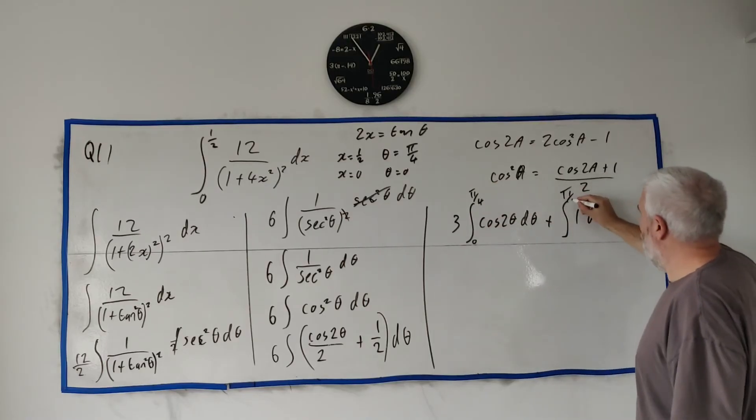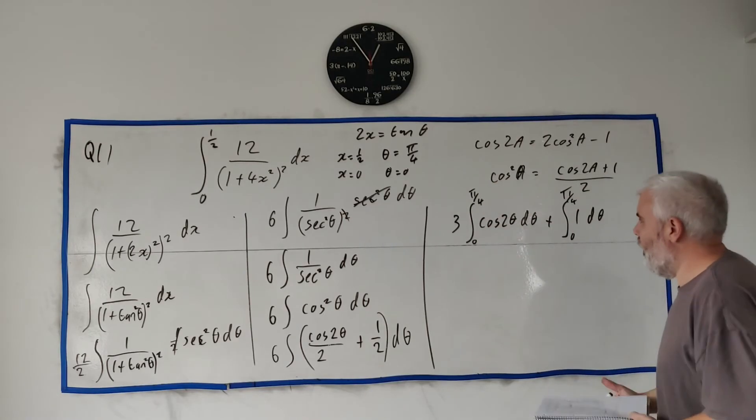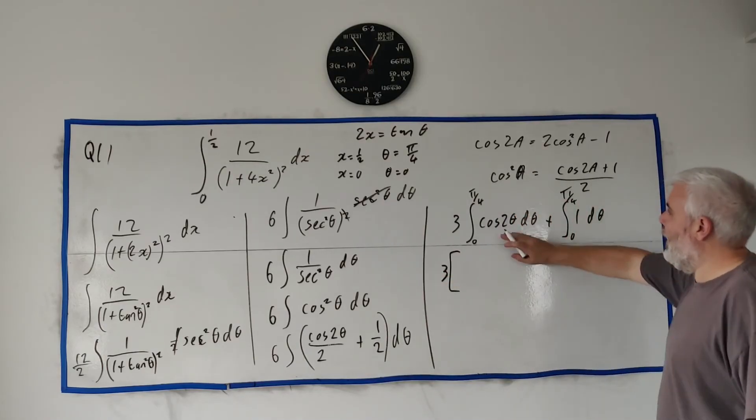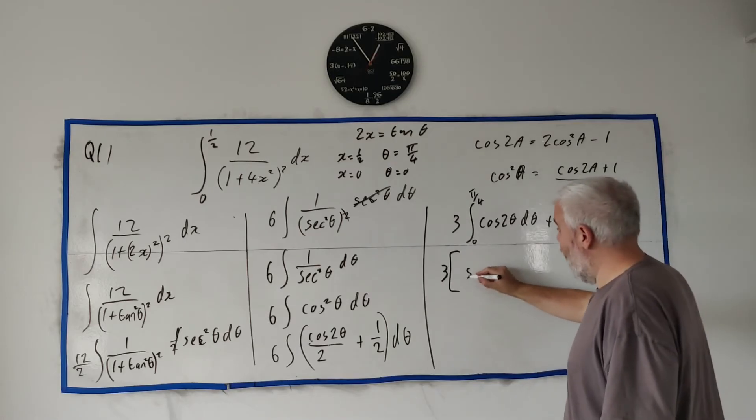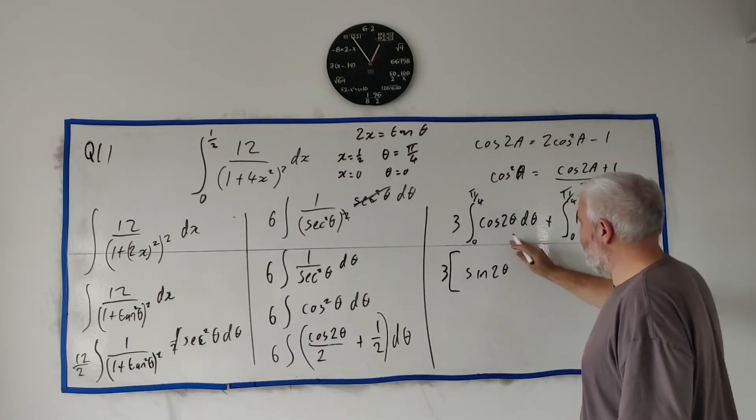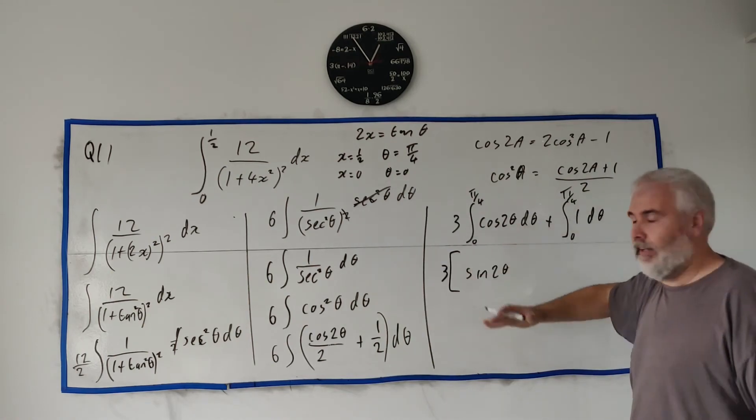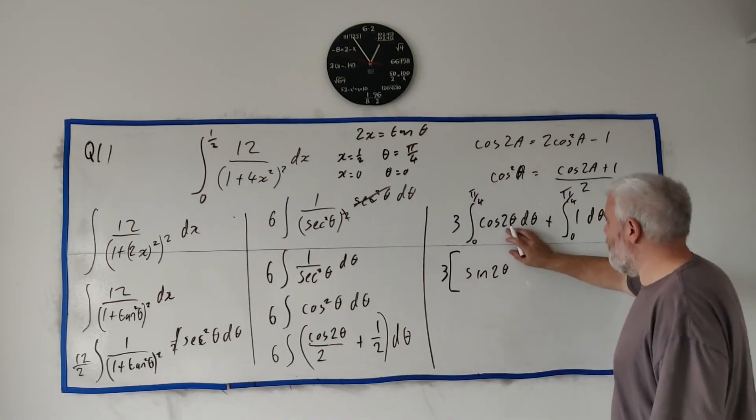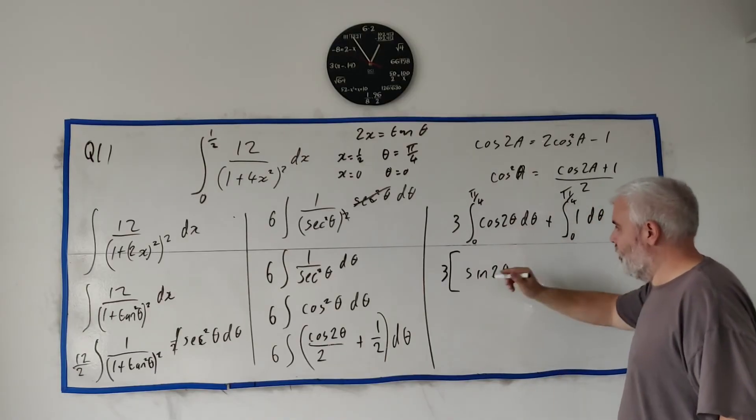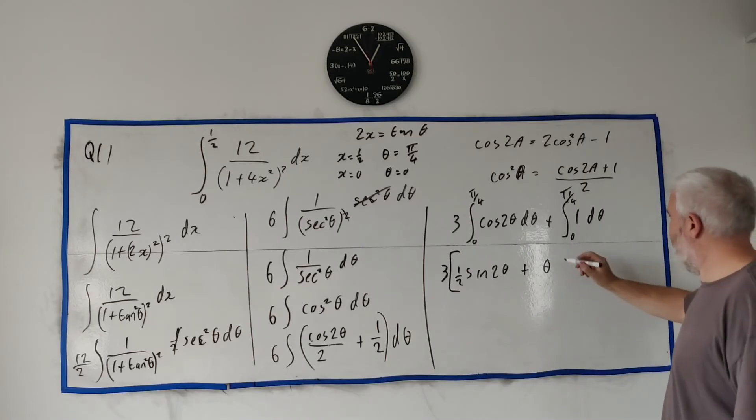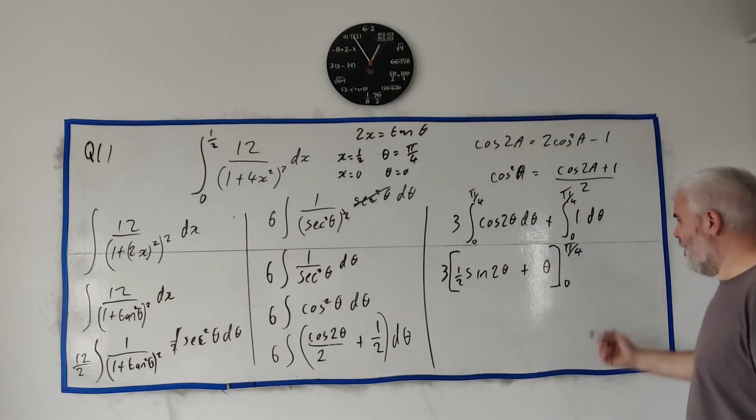So we can go ahead and integrate this. Let's see, 3 outside and multiply it into everything later. The integral of this is - the integral of cosine is sine, and we leave what's in there alone but now we have to deal with it by differentiating it and dividing our answer as long as it's simple. So the derivative of this is just 2, which is simple, so we can just divide that by 2. Plus the integral of this is just θ. And that's it. This is all still evaluated at π/4 and 0.